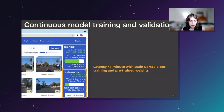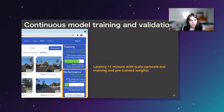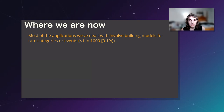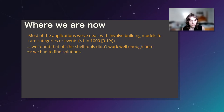In the process of building these things, we found that most applications involve building models for rare categories or events — when I say rare, I mean they come up 0.1% or less of the time, so one in a thousand. These are the ones that have cropped up most for us in computer vision-style applications. We found that off-the-shelf techniques for training and validating models didn't really work well enough in these situations, so we had to find solutions to these problems to get even basic deep model training working.